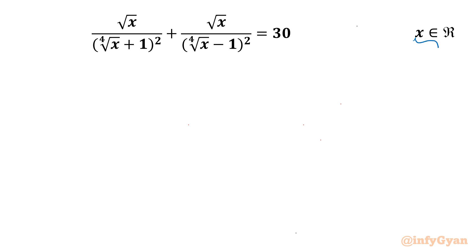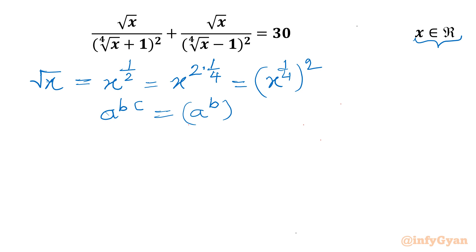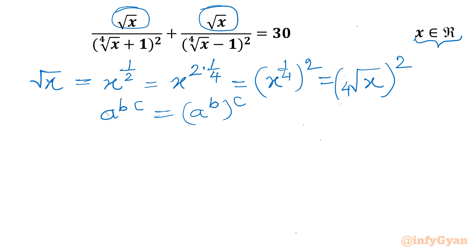We have to find out the real solutions. Let's get started with our numerator, root x. I can write root x as x to the power half. Further, I can write x power 2 times 1/4, which will be written as x to the power 1/4, whole power 2. Using exponent law a^(b×c) = a^b whole power c, this can be written as the fourth root of x, whole square.